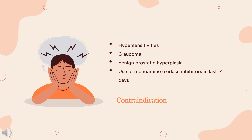Contraindications. Known contraindications include hypersensitivity to Doxepin, other TCAs, or any of the excipients in the product used; glaucoma; a predisposition to developing urinary retention, such as in benign prostatic hyperplasia; and use of monoamine oxidase inhibitors within the last 14 days.